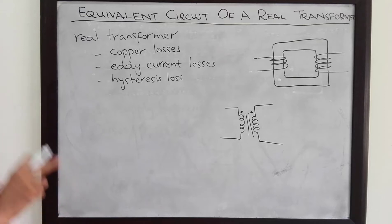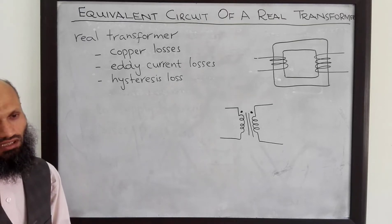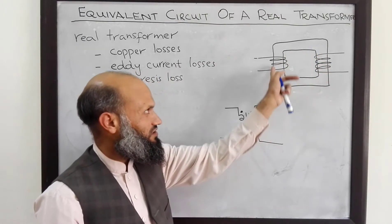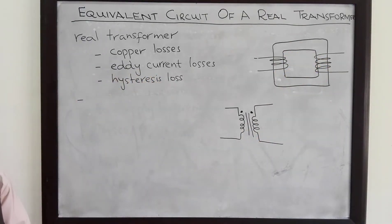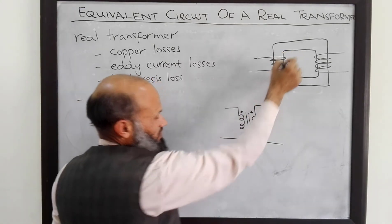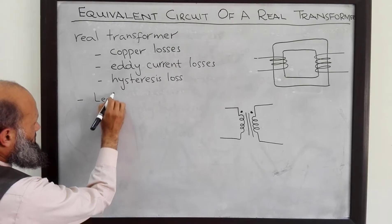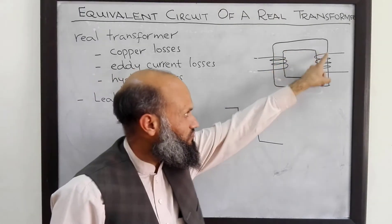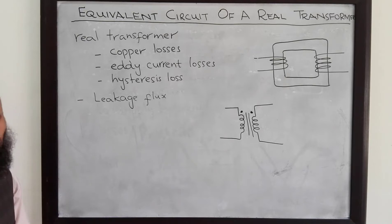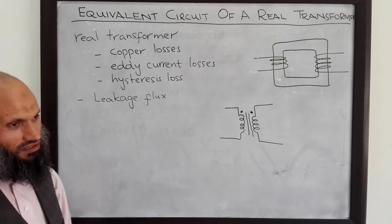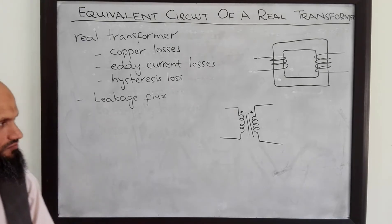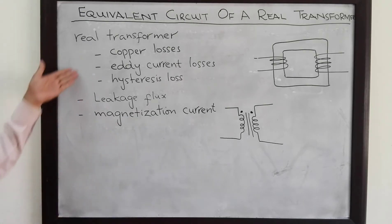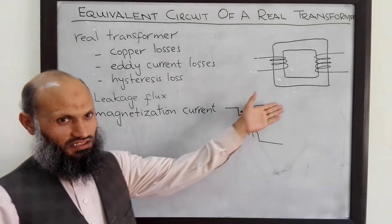In a real transformer, the reluctance of the core is not zero, so not all of the flux is constrained in the core — there is also leakage flux, where some flux flows through the air. Furthermore, some current is required to cause the flux to flow in the core; that current is called magnetization current. In an ideal transformer, magnetization current is zero, but in a real transformer we have magnetization current. So, how do we incorporate all these effects into the equivalent electrical circuit of a transformer?